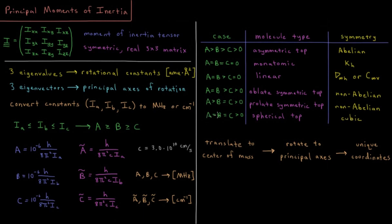The case where all three rotational constants are equal and non-zero is called a spherical top. A spherical top has very high symmetry; essentially every set of axes you can pick are going to be principal axes, and it is equally easy to rotate around any axis you choose. This applies to highly symmetric molecules like methane, SF6, or buckminsterfullerene — these are cubic point groups.